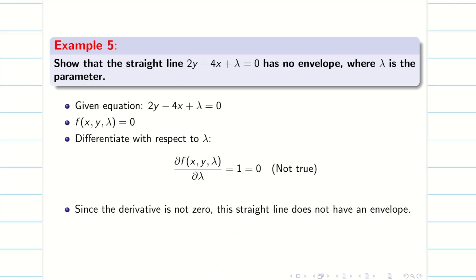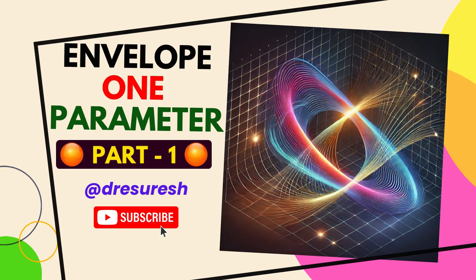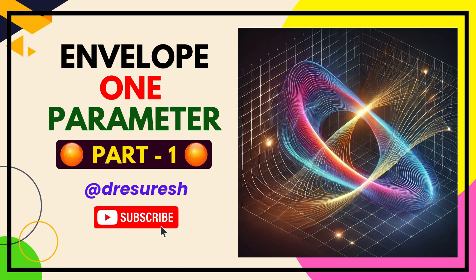So with this we conclude this session. In the next session, we are going to continue problems on envelope with one parameter where the equation cannot be written in the form Am² + Bm + C = 0. Thanks for watching. Subscribe to our channel and share with your friends. See you in the next video.